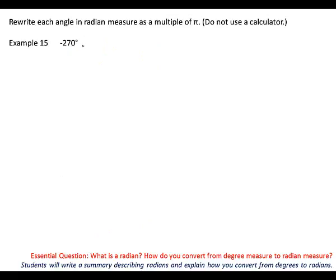Everybody try number 15 on your own — multiply by π over 180, get it reduced. It'll take about 30 seconds. What goes into both 18 and 27? Nine — nine into 27 three times and nine into 18 twice. So, negative 3π over 2.